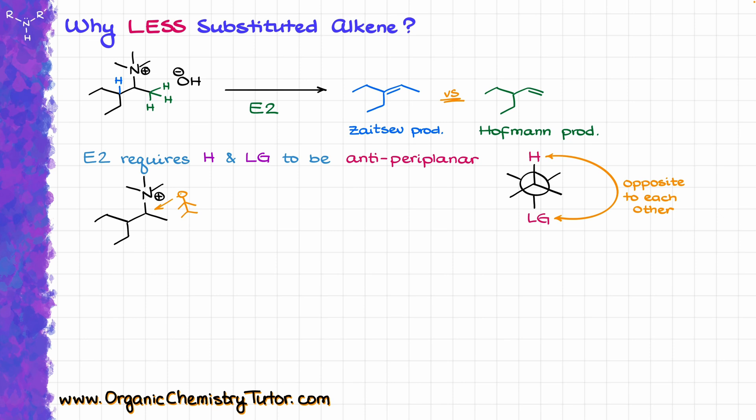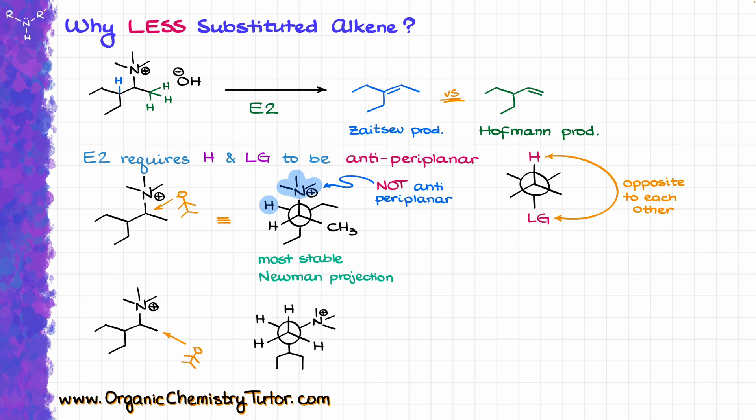If I draw my most stable Newman projection, I get a structure looking like that. The problem I run into is that the leaving group, my nitrogen, and the hydrogen are not anti-periplanar to each other. However, if I look at my molecule from the other direction, I have the Newman projection looking like this. Now I have a different picture. My leaving group is anti-periplanar to my hydrogen, and no matter how I spin my atom, I always have a hydrogen which is anti-periplanar to my leaving group.